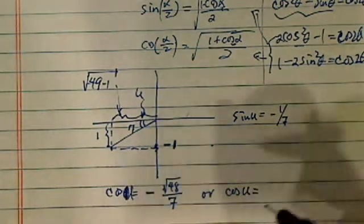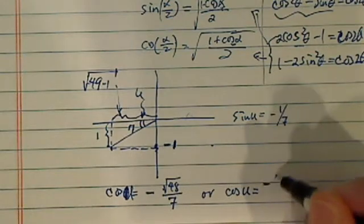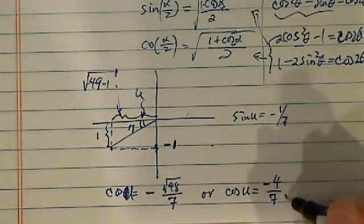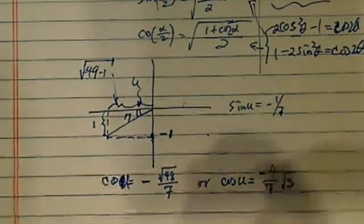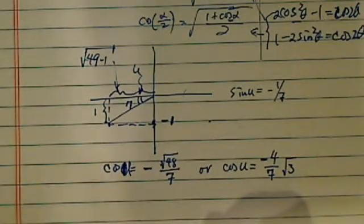...is equal to minus 4 radical 3 over 7. Now having this information, we're ready to calculate the half angles.